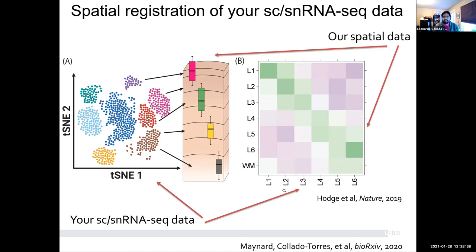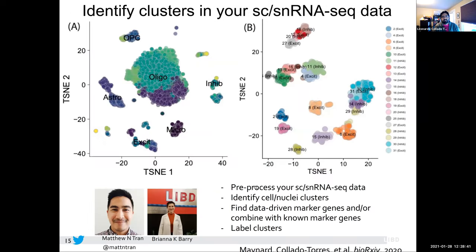Next we're going to try to answer: which of these clusters seems to have higher expression in one of the layers? The way we do this is first you start with your single cell or single nucleus RNA-seq data, do the standard analysis of preprocessing the data and identifying the clusters. Typically what people do right now is find marker genes across these clusters, and based on the literature of what those marker genes are known to be related to, you can assign your clusters some functionality. For example, a cluster might be enriched for genes expressed in oligodendrocytes.